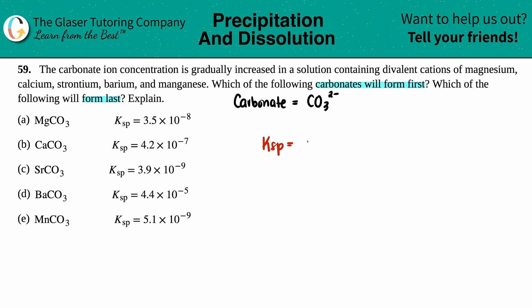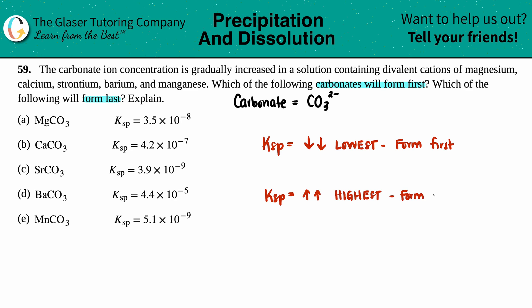If the Ksp is the lowest — think of a number line, you hit low numbers first before going to higher numbers — so the lowest Ksp is always the one that forms first. The highest Ksp value will always form last. But we can only do this if what we're comparing has the same number of ions.